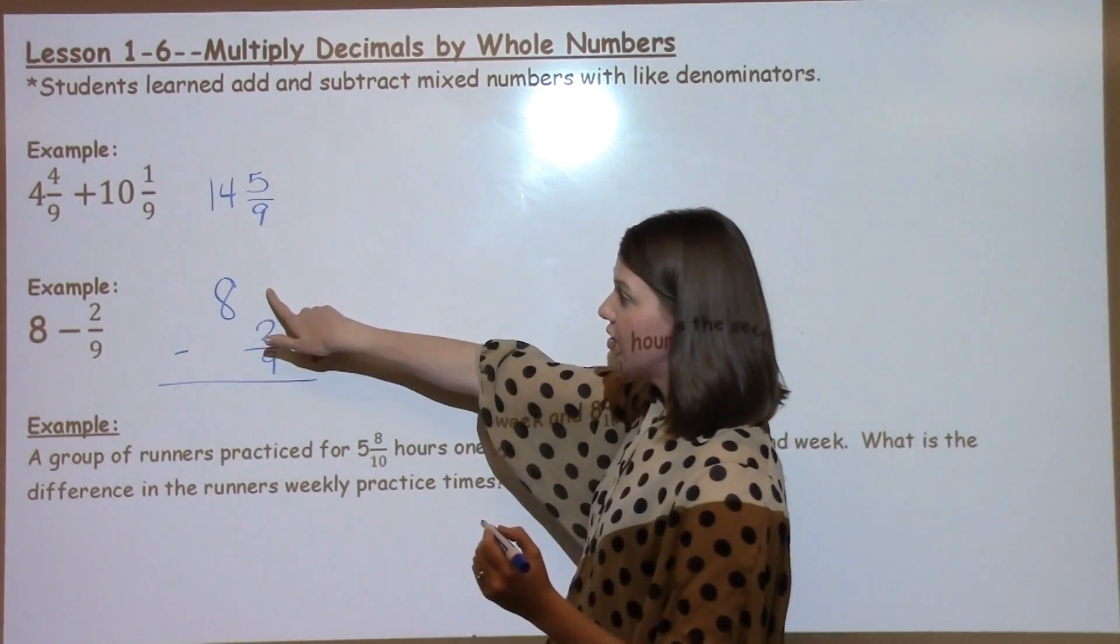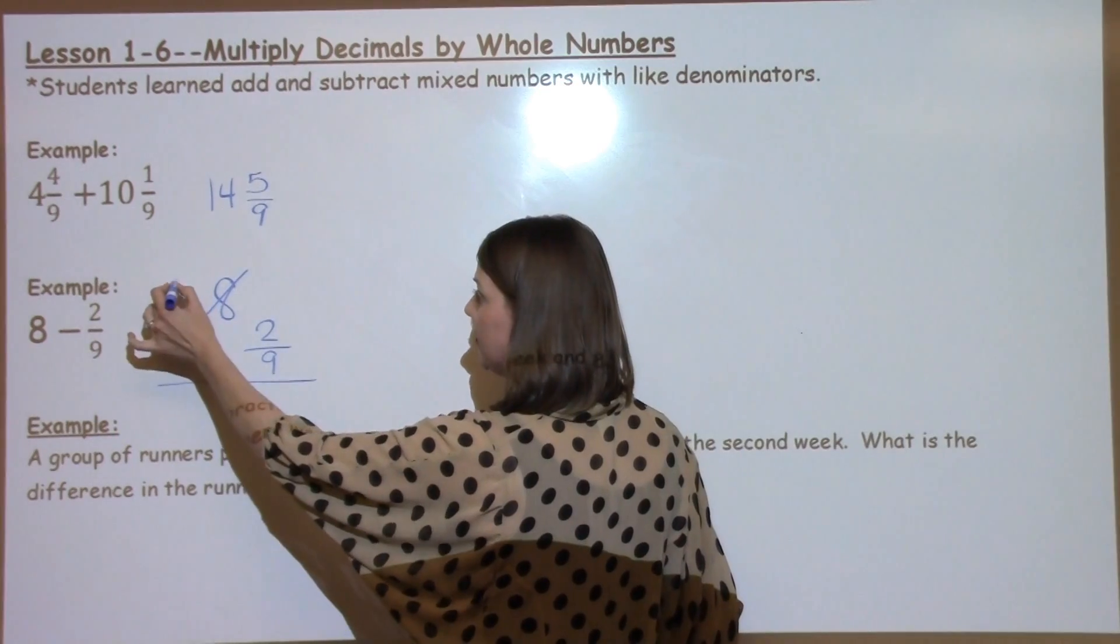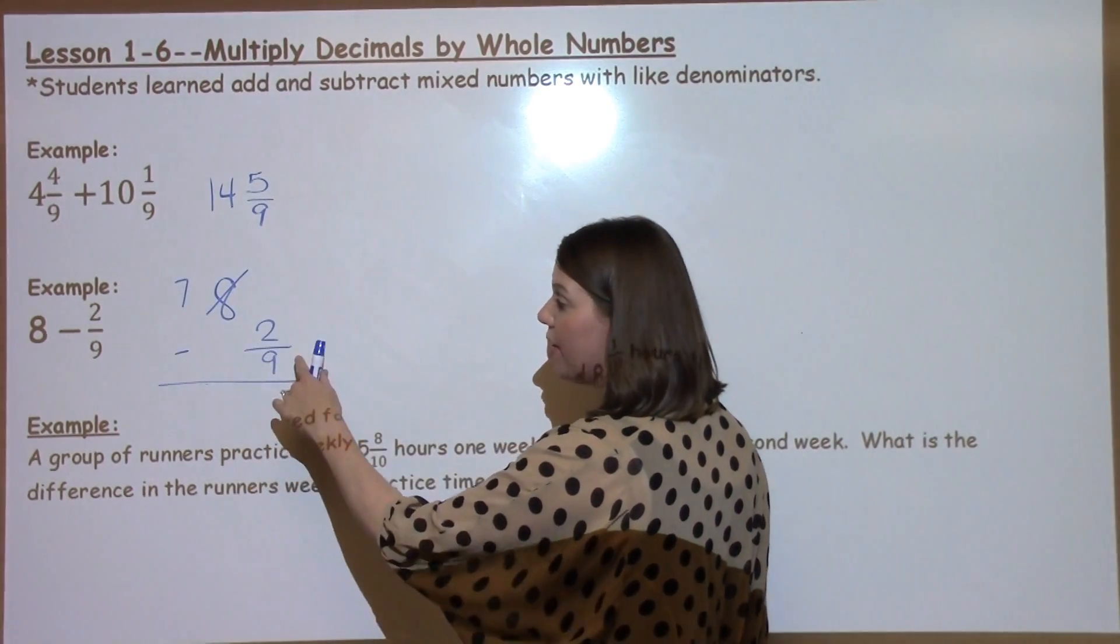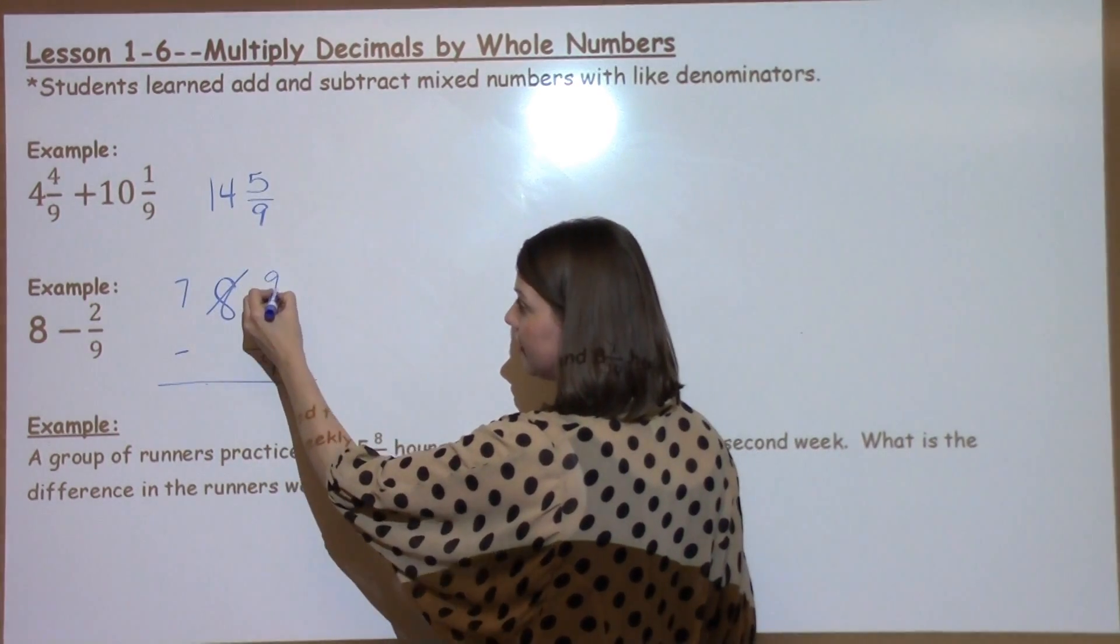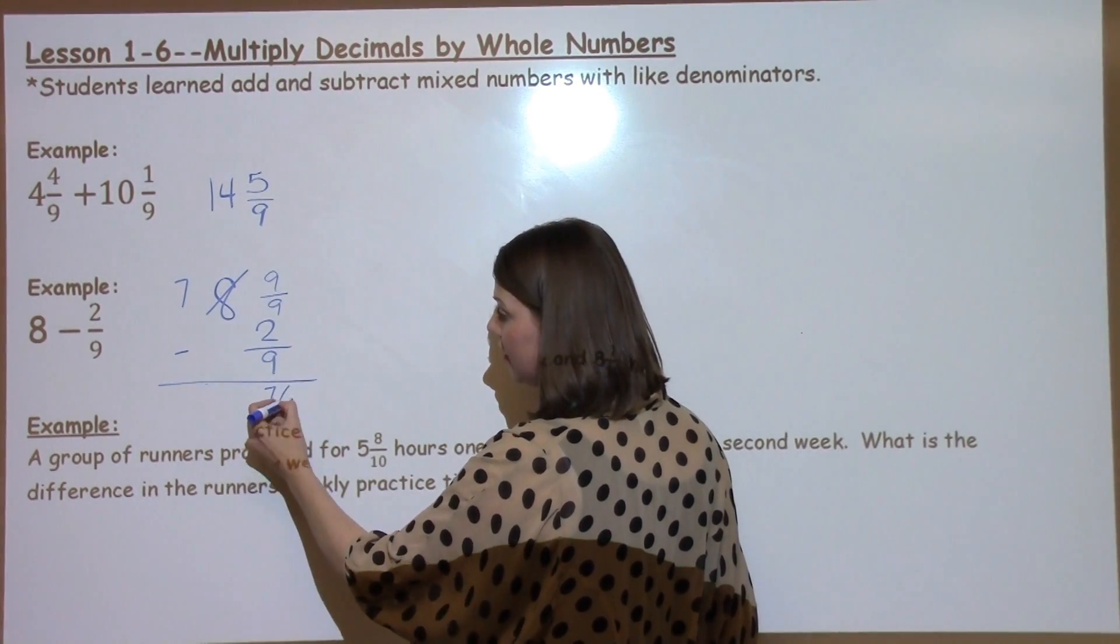When we solve this question, like I said, there's no fraction over here. We need to borrow from our 8, our whole number. So this becomes a 7. And we know that one whole in this case is 9 ninths. 9 ninths minus 2 ninths is going to be 7 ninths.